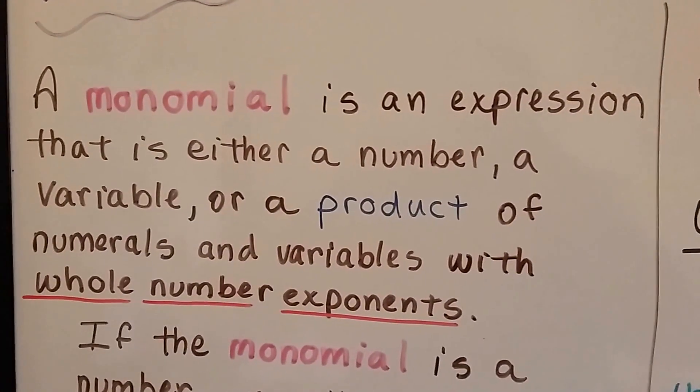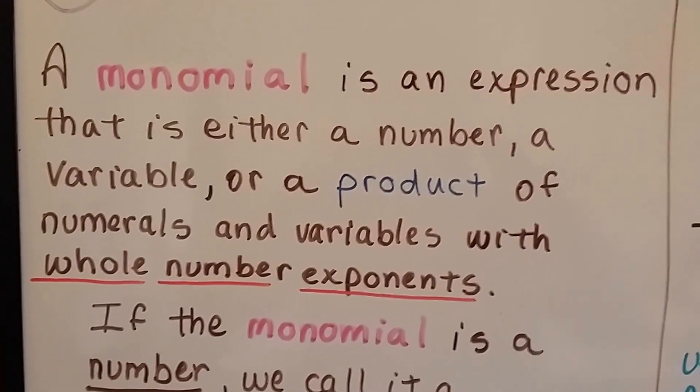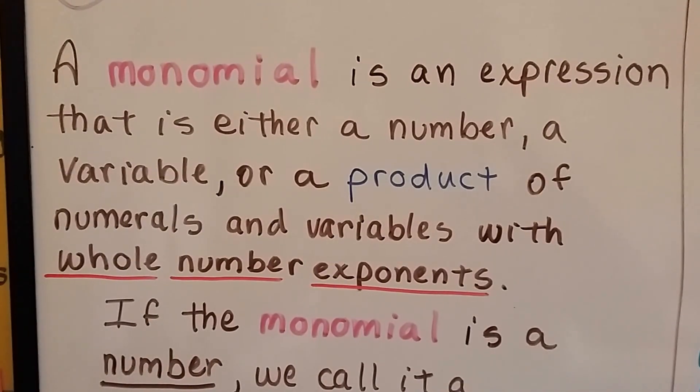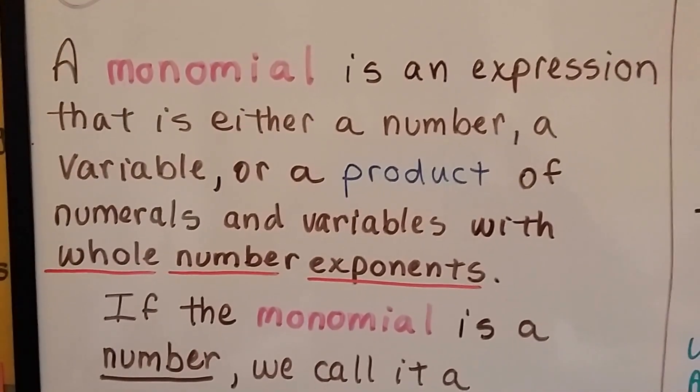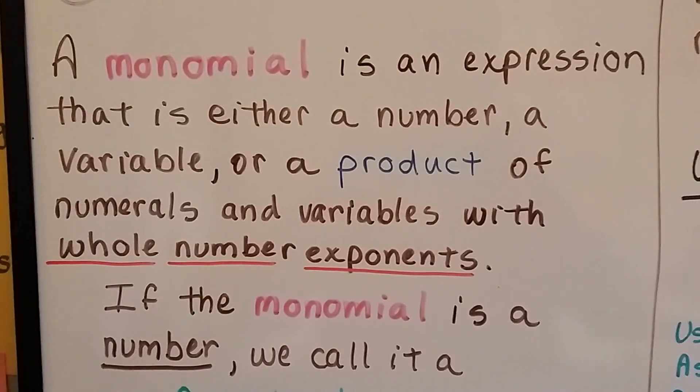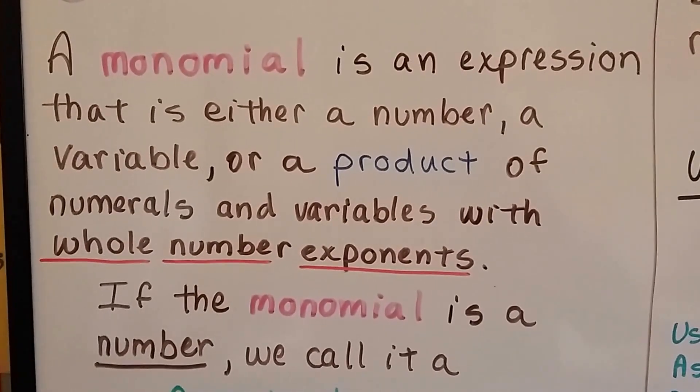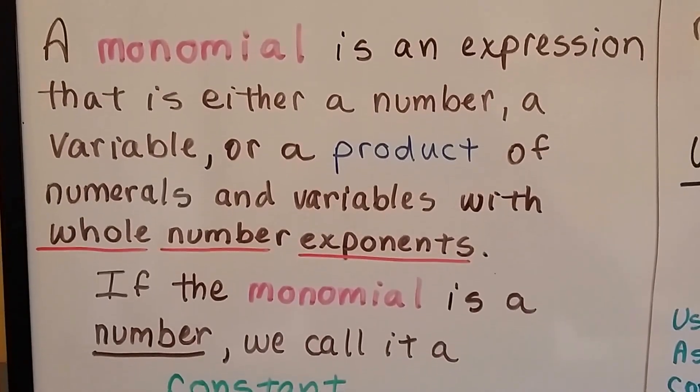A monomial is an expression that is either a number, a variable, or a product of numerals and variables with whole number exponents. So the exponent has to be a whole number, because did you know that exponents could be a fraction? Yeah. So in order to be a monomial, it has to have a whole number exponent.